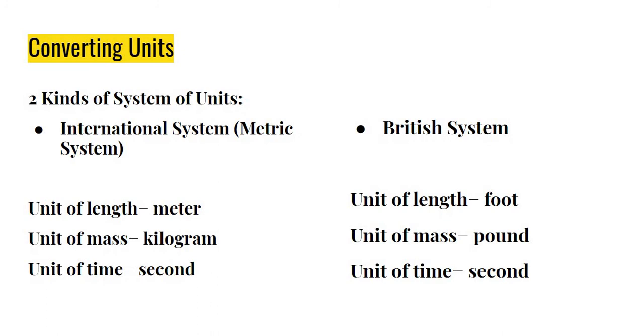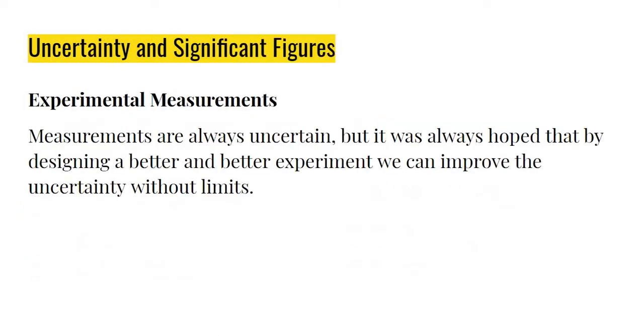Two kinds of system of units. International system, or metric system, British system. For the unit of length, we'll be using meter. Unit of mass, kilogram. Unit of time, second. For the British system, unit of length, foot. Unit of mass, pound. Unit of time, second.